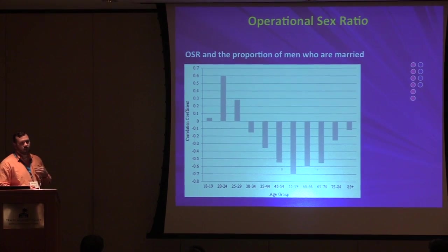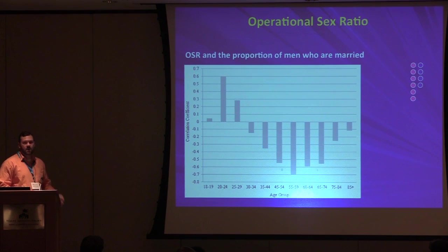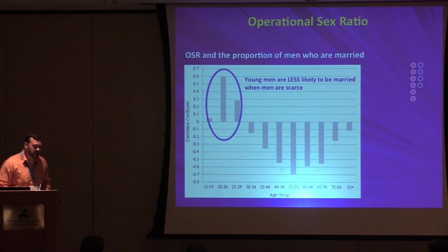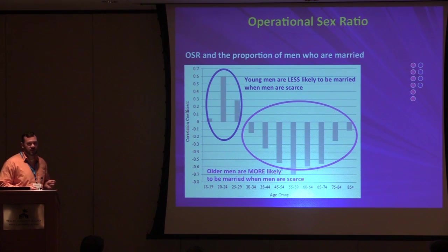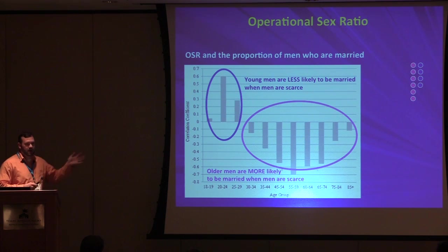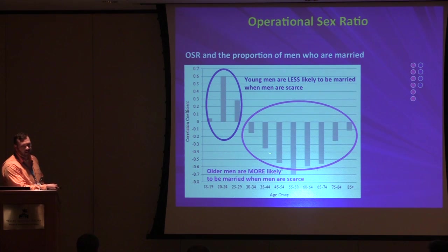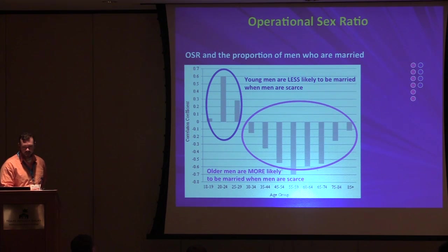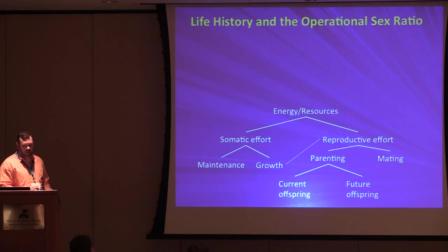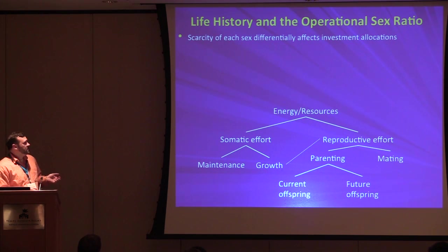Somewhat paradoxically, when men are young and scarce they don't settle down and start a family — men are actually less likely to be married when they're scarce. This strategy can only pay off for so long, probably mediated by phenotypic quality, and with senescence they can no longer be successful with it. So when they get old enough they do eventually settle down and actually have higher marital rates than men in other populations.